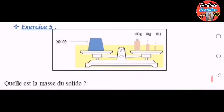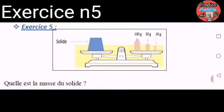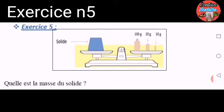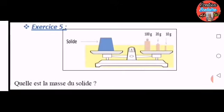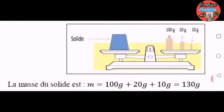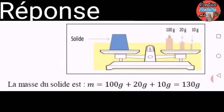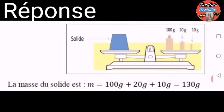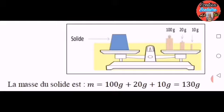Exercice numéro 5. Quelle est la masse du solide ? Réponse. La masse du solide est M égale 100 grammes plus 20 grammes plus 10 grammes égale 130 grammes.